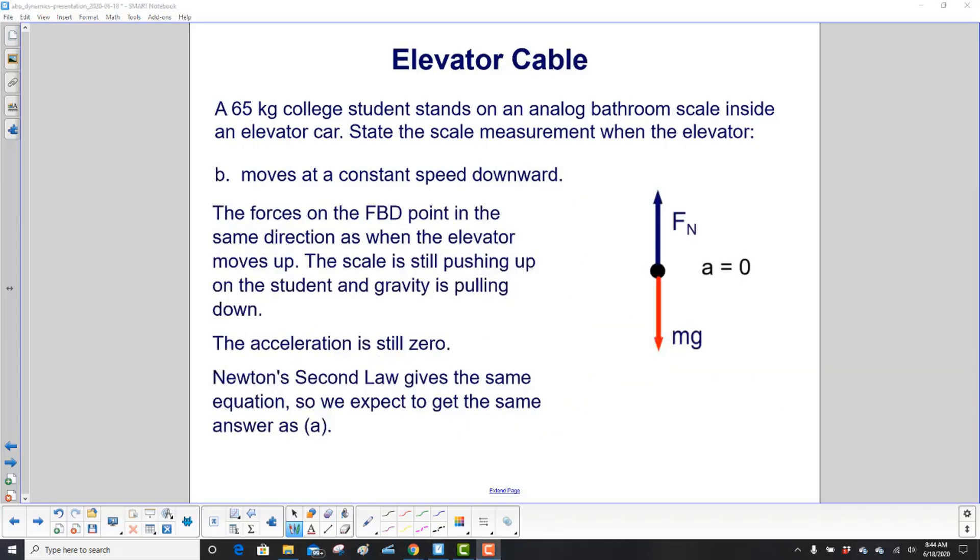Now the elevator is moving at a constant speed downward. The forces on the free body diagram still point in the same directions. The scale is still pushing up on the student. And gravity is still pulling the student down. Acceleration is still zero. So we look at that picture. So we're going to expect that Newton's second law will give the same equation. So we should get the same result as part A.